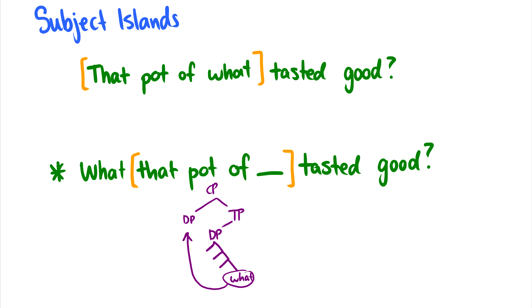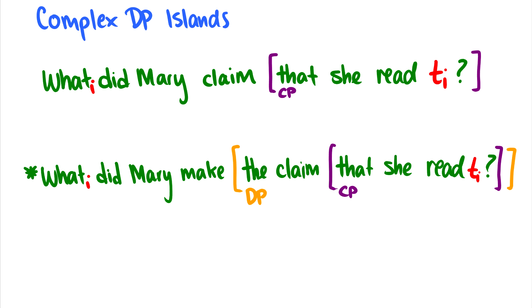So those are subject islands, adjunct islands, and wh-islands. Now we can move on to complex DP islands, and these are slightly more complicated. So for instance, we can have sentences like what did Mary claim that she read, where the reading of something has moved to the front of the sentence and we can ask about this. So what did Mary claim that she read? In fact, something important here is that this claim is a verb. So let's compare this with the second sentence: What did Mary make the claim that she read? This doesn't have the same meaning as what did she read. So this what here does not really correspond to this what up here. They don't have the same meaning. And the idea behind this island...